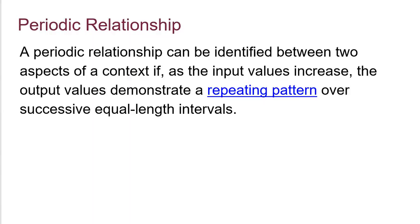A periodic relationship can be identified between two aspects of a context if, as the input values increase, the output values demonstrate a repeating pattern over successive equal-length intervals. X values always move left to right — like time, which always ticks by and gets bigger. If we look at equal-length intervals of x values and see something that repeats, that's known as a periodic relationship.